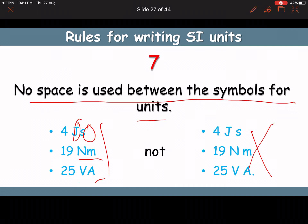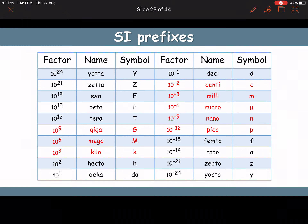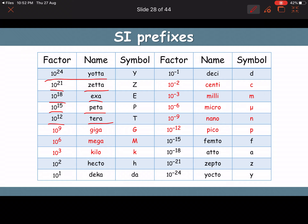SI prefixes are used for powers of ten. From largest to smallest positive powers: 10²⁴ = Yotta (Y), 10²¹ = Zetta (Z), 10¹⁸ = Exa (E), 10¹⁵ = Peta (P), 10¹² = Tera (T), 10⁹ = Giga (G), 10⁶ = Mega (M), 10³ = Kilo (k), 10² = Hecto (h), 10¹ = Deka (da).